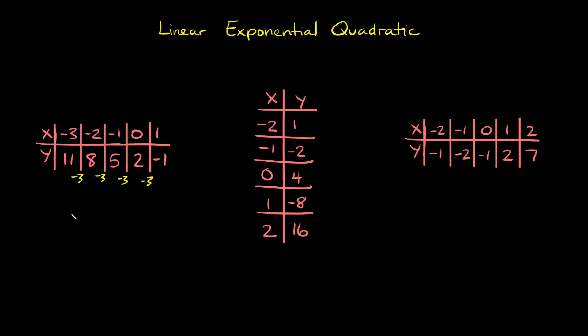Whenever you add or subtract the same number over and over again, that's a linear function. You can always graph these tables off to the side if you want to just double check your answer. But whenever you have a constant difference, so here we're subtracting 3 over and over, that's a linear function.